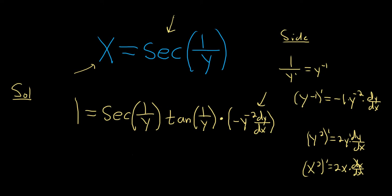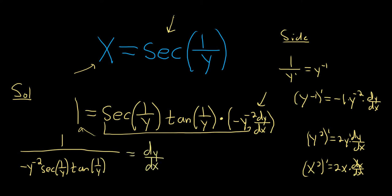Now we're just going to divide by everything except the dy/dx. We're going to divide by all of this stuff. So basically I'm going to take all of this and just write it down here under the 1 like this. 1 over negative y to the negative 2 secant 1 over y tangent 1 over y equals dy/dx. And technically that is the final answer. It just looks really bad.